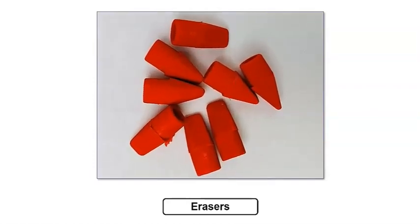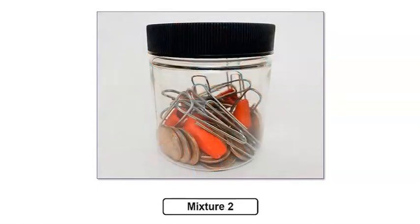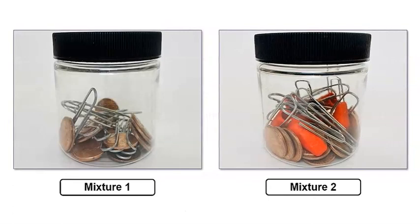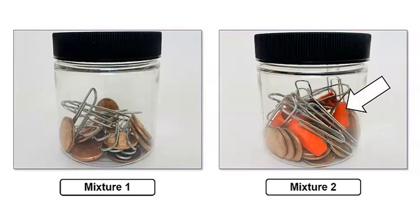What do you notice? Maybe you notice that the erasers are red and small. I notice that the erasers are smooth. Great! Let's add the erasers to our mixture. Now we have a mixture of three objects. What do you notice about this mixture? I notice that this mixture looks different from our first mixture. But can you still see individual pennies, paper clips, and erasers? Yes!